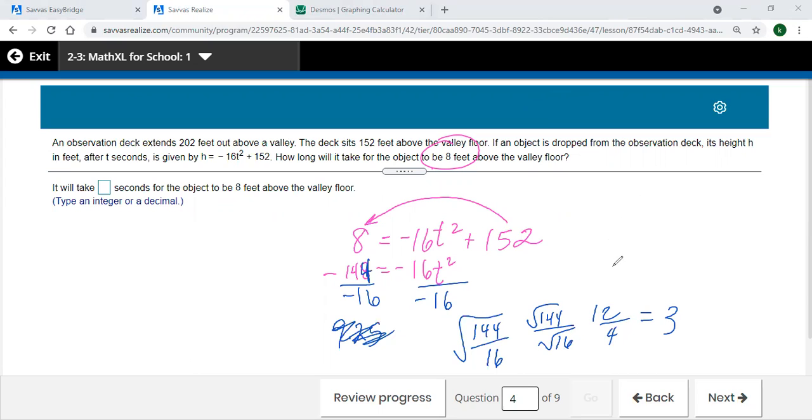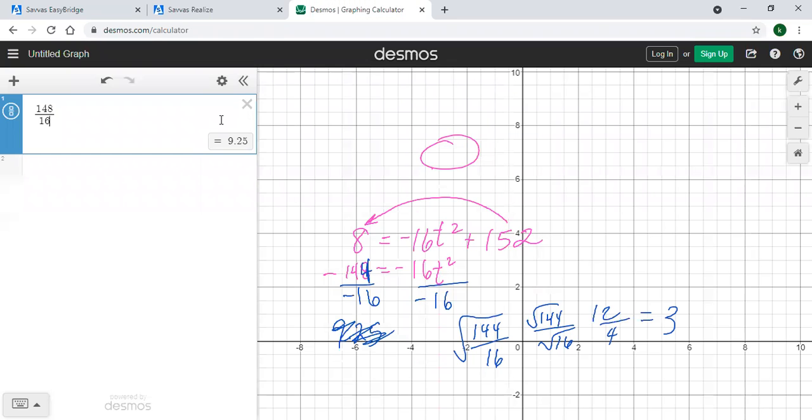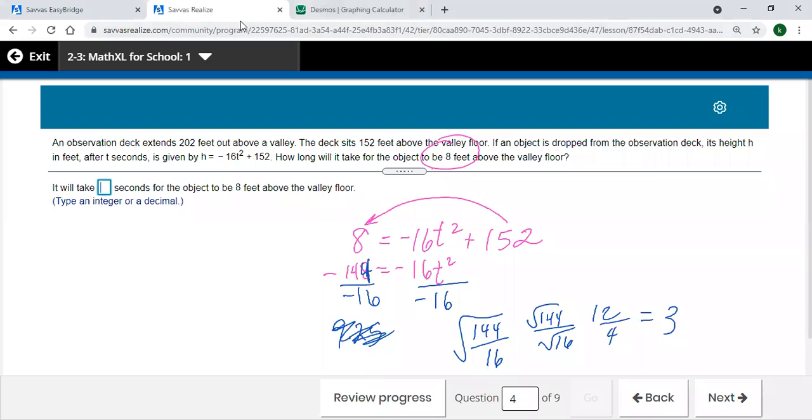But that's t squared... 144 divided by 16, I don't think that should be 3. It should be 12 divided by... let's check that. 144 divided by 16... oh that's right, and then I already did the square roots, so that's my answer right there already.